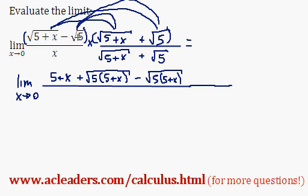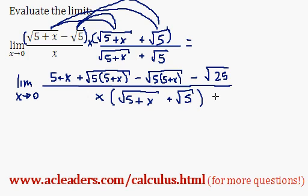negative root 5 multiplied by positive root 5 is just going to be negative root 25, which will just be negative 5 anyways. And down at the bottom here, I'm just going to leave this as x times the root of 5 plus x plus root 5. And great. So what will happen at the top here is that these guys are going to cancel out, which is actually the reason why I chose to multiply the whole fraction by this anyways.